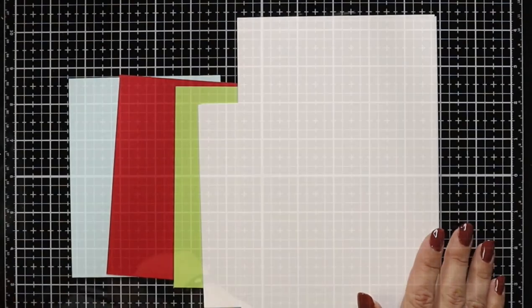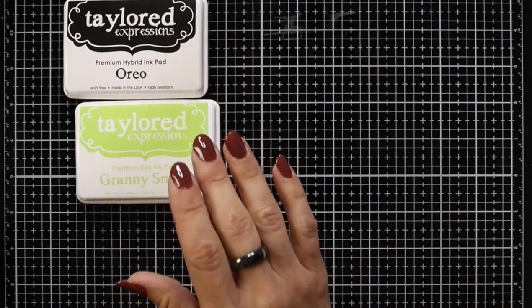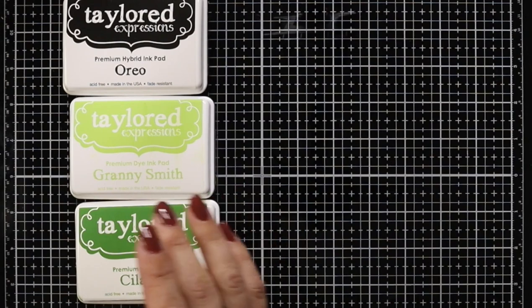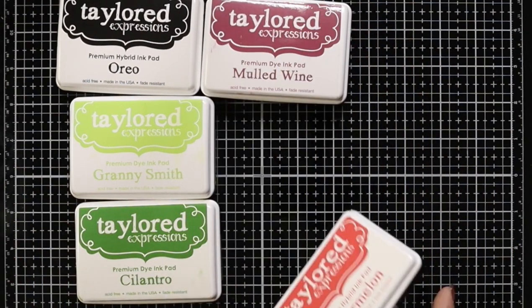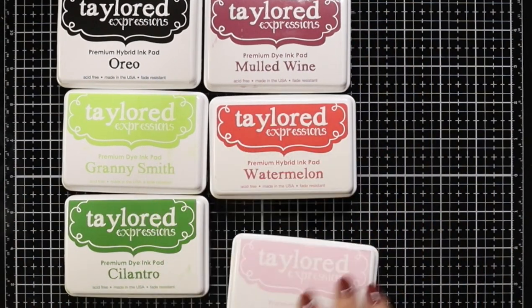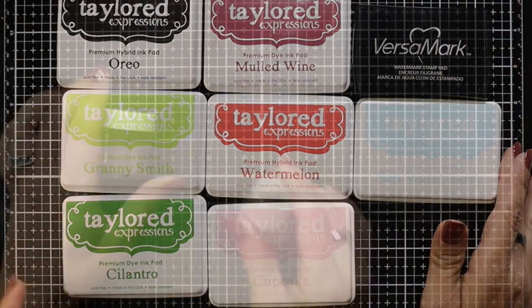For inks I'll be using oreo, granny smith, cilantro, mulled wine, watermelon, cupcake, saltwater taffy, and versamark.